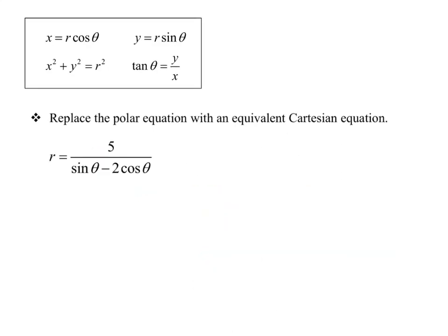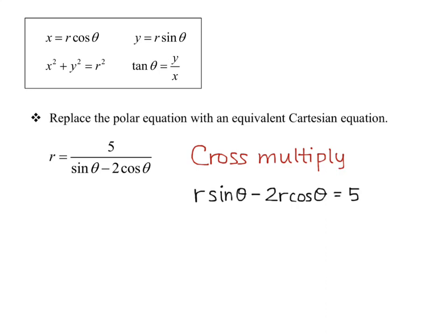Next, we want to replace the polar equation with an equivalent Cartesian equation again. We have r equals five over the quantity sine theta minus two cosine theta. What I want to do first is get rid of the denominator, because if I multiply both sides by the denominator, I'll get r sine theta minus two r cosine theta, and I have identities for both of those. So I'll cross multiply and get r sine theta minus two r cosine theta equals five.